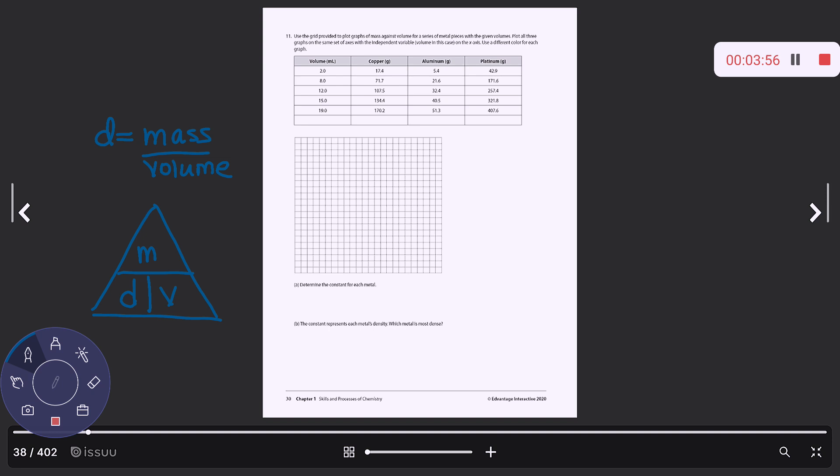There is something called the density triangle, which looks like this. Obviously you could be solving for mass, volume, or density. If you cover up the variable that you're solving for, it will give you the equation that you need. So for instance, if I'm solving for density and I cover up the D, it says D equals M over V. I'm solving for mass. I cover it up and I'm going to take density times volume. I'm solving for volume. I cover it up and it says take mass divided by density. So if you're just canceling units, this is super easy.